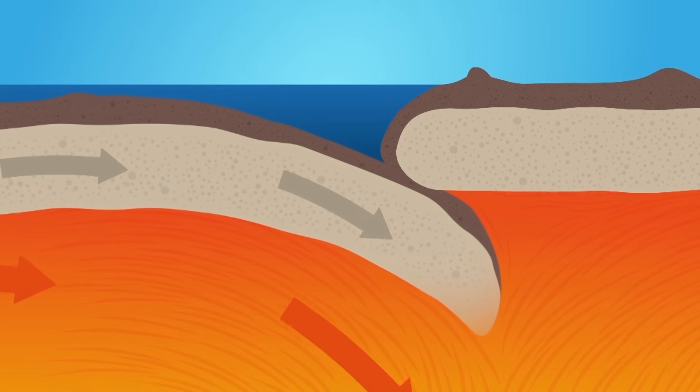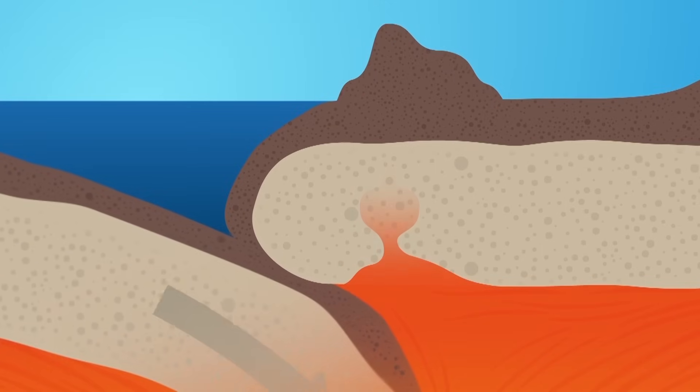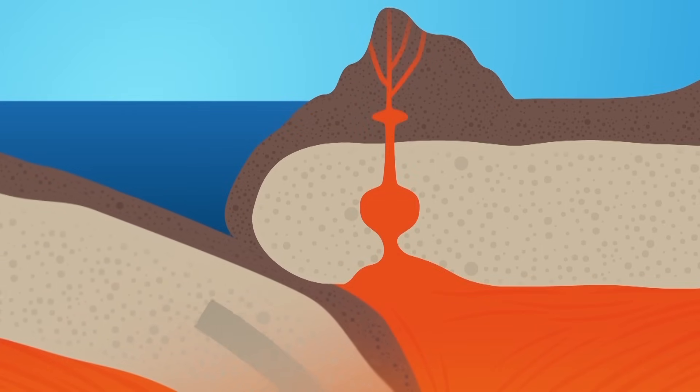On its way down into the mantle, the oceanic plate melts. But the liquid magma can return to the surface at another place. A volcano is born.